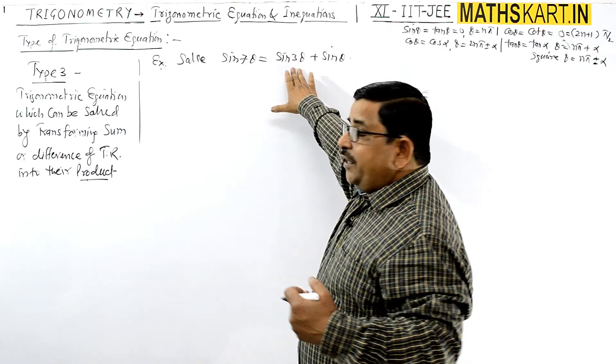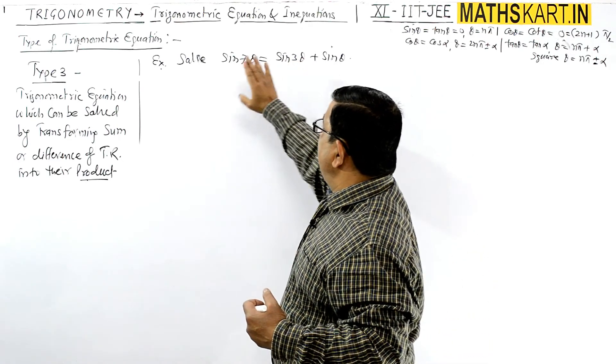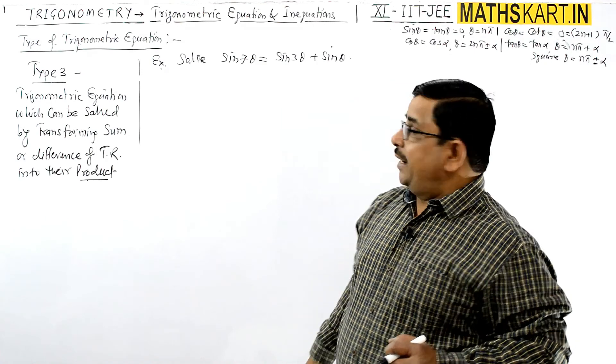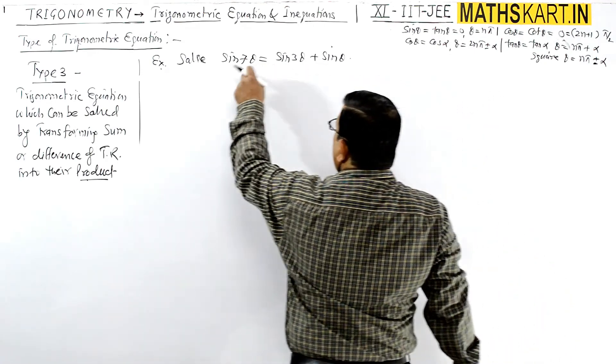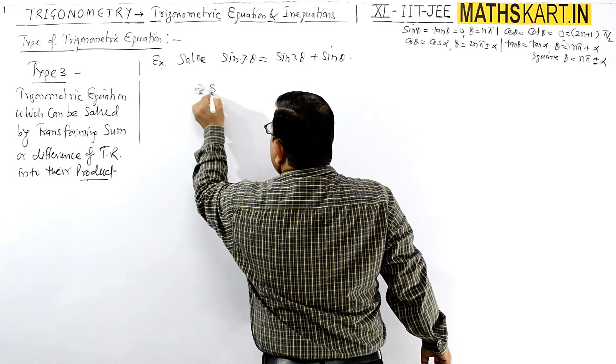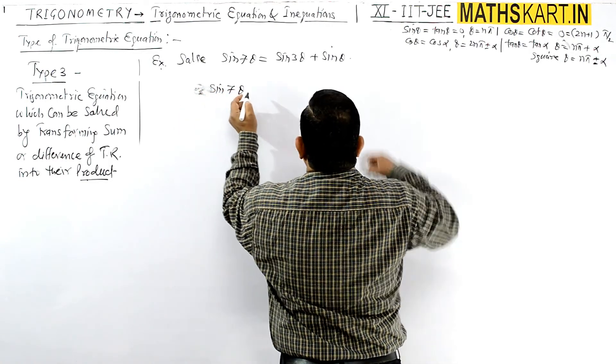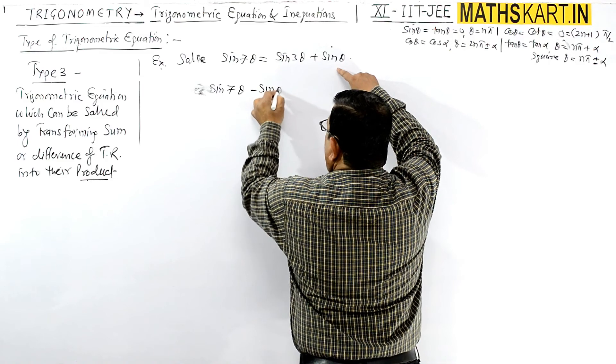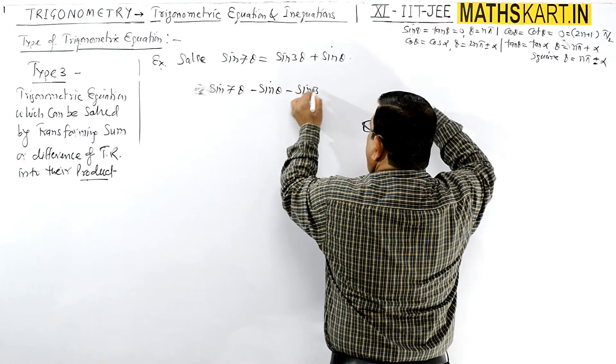And that 3θ is available here. If we combine these, we'll get a single term. So it's better to combine these two together and take everything to the left hand side. So that is sin 7θ - sin θ - sin 3θ = 0.